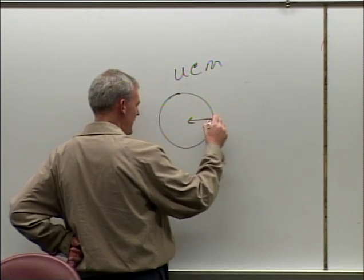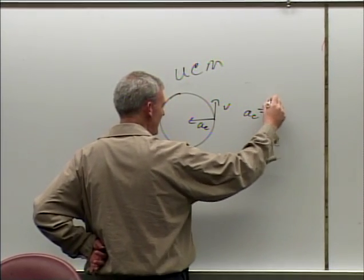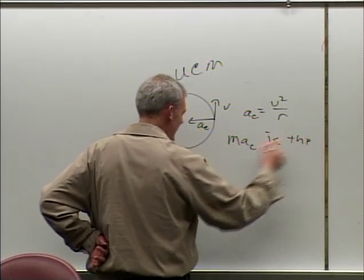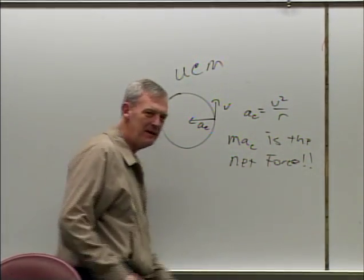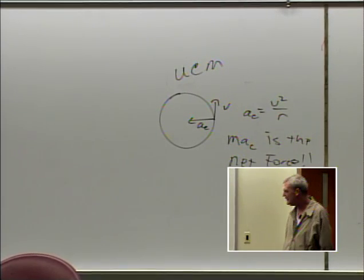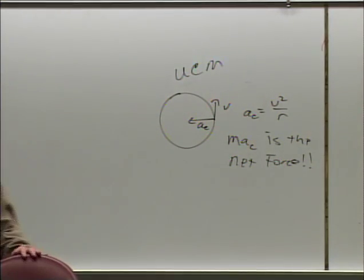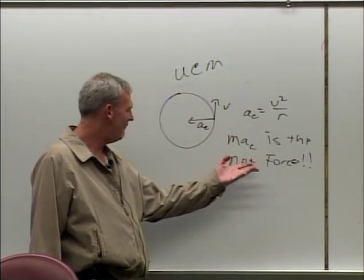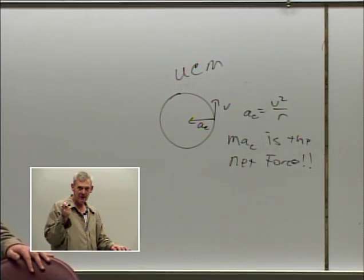Here's the acceleration: v is going this way, and the centripetal acceleration equals v² over r. And mac equals the net force — keep that in mind. It took me forever to figure this out: mac is the net force, and that's for uniform circular motion.